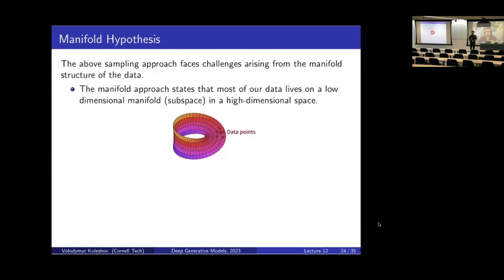This question involves a fact from machine learning called the manifold hypothesis. The problem is that what I said is correct in theory, but not always correct in practice because of peculiarities of the data we're modeling. Langevin Dynamics requires the score function to be defined at every point of the input space X. But with a lot of data we're interested in modeling, such as image data, you can argue that the true score function would actually be undefined in most places of the input space.